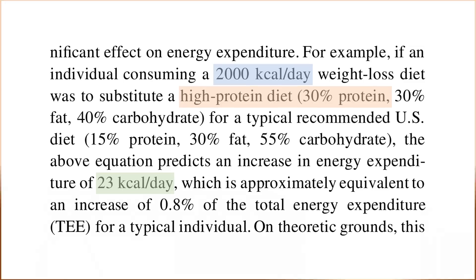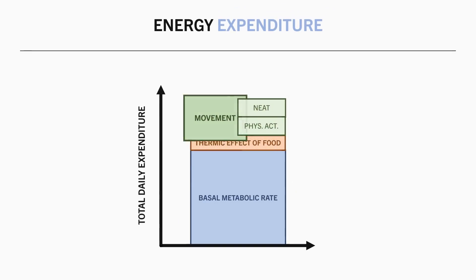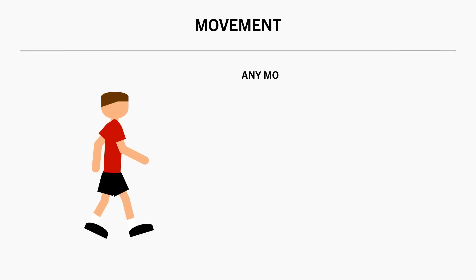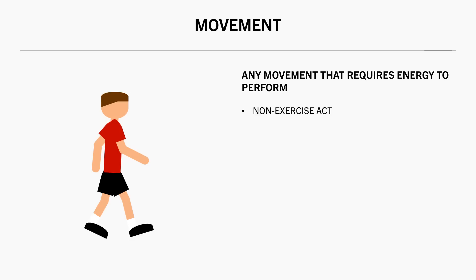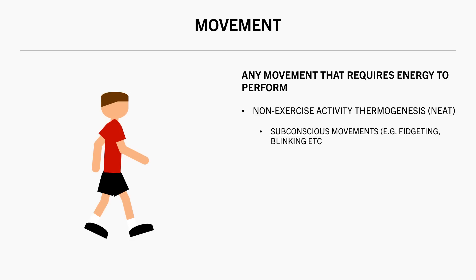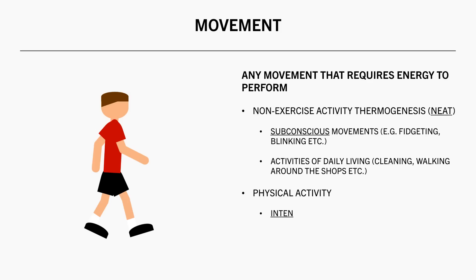The third component of energy expenditure is movement. This refers to any movement of the body which requires energy to perform. As mentioned, this can be sub-categorized into NEAT and physical activity. NEAT refers to subconscious movements like fidgeting, as well as movements required for daily tasks, like cleaning the house or walking around the grocery store. Whereas physical activity refers to intentional movement such as playing sport, lifting in the gym, performing cardio, and so on.